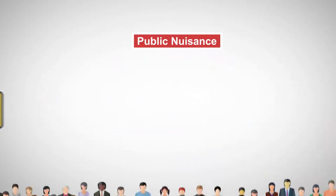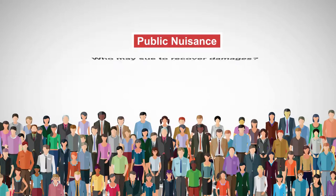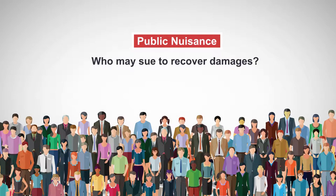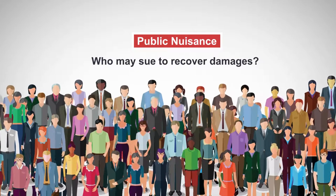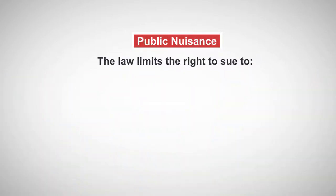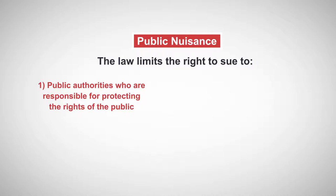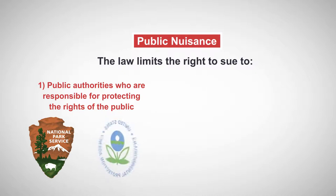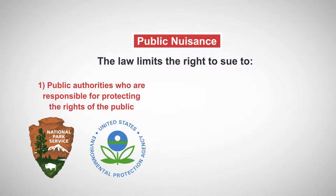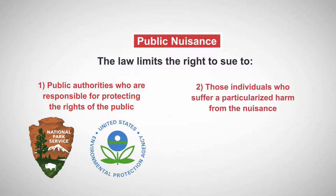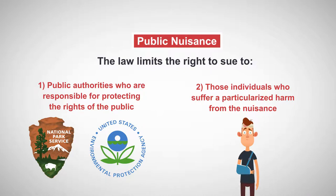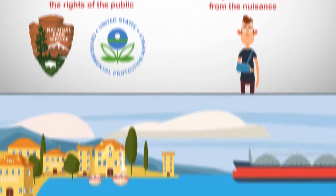However, a major difference from private nuisance concerns who may sue to recover damages. Since the impact of the nuisance is felt by the public, the law limits the right to sue to public authorities who are responsible for protecting the rights of the public, such as state and federal agencies, park departments, or environmental protection agencies, and those individuals who suffer a particularized harm from the nuisance — meaning a harm different in kind than that suffered by the public at large.